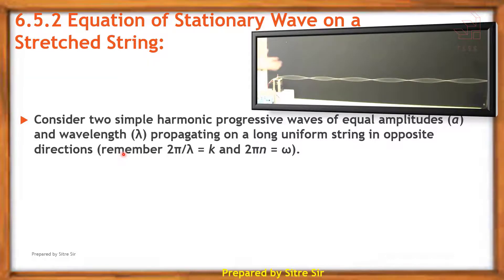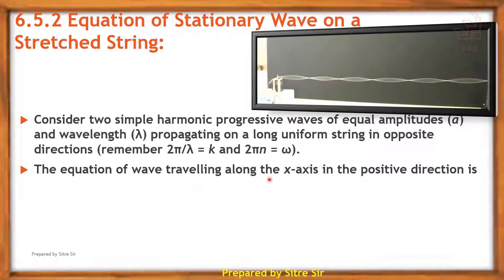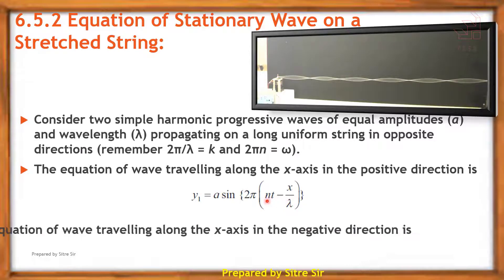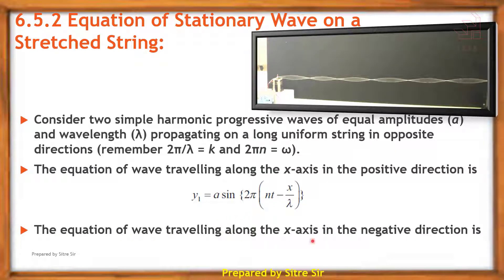The equation of a wave traveling along the x-axis in the positive direction is y1. The equation of a wave traveling along the x-axis in the negative direction is y2, given by: y2 = A sin(2π(nt + x/λ)). This is a simple harmonic progressive wave.